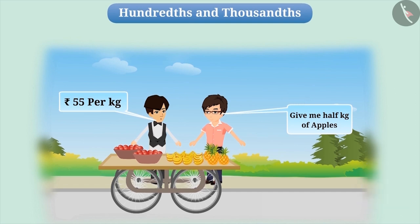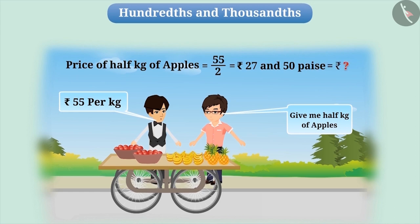You got it right. Since Rahul is buying half a kg of apples, he has to pay half the price for 1 kg. That is, 27 rupees and 50 paise. How do we express this in rupees?